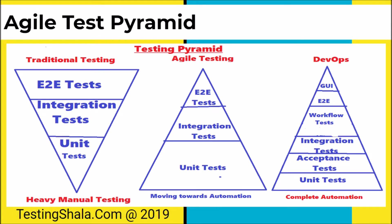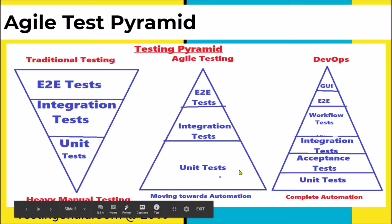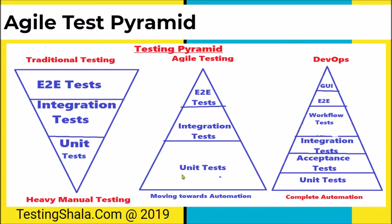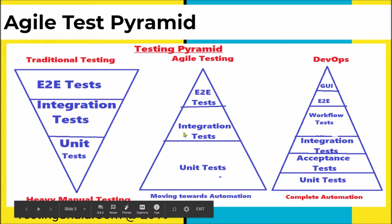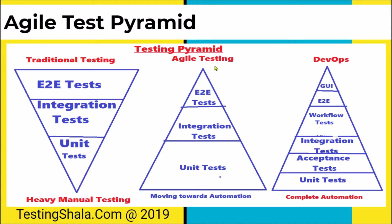In the agile model, because we have a sprint model, every sprint will have certain user stories to be implemented. When a user story is implemented, more unit tests are written for those user stories, then integration test cases are executed by the tester, and end-to-end testing is also re-executed. That is the overall goal of the agile testing pyramid.